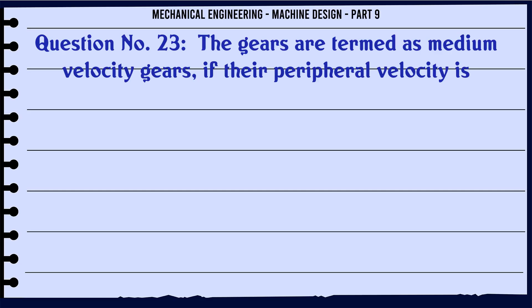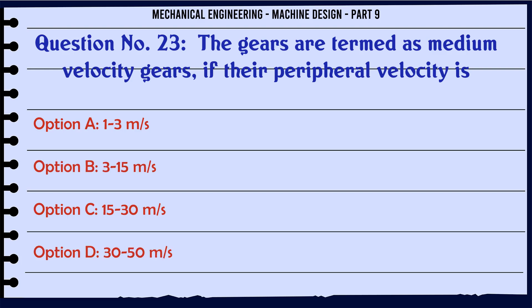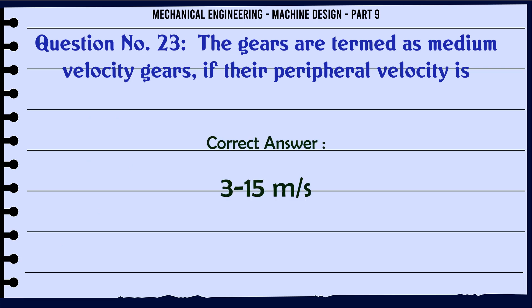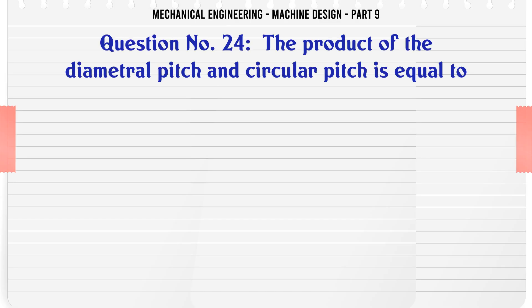The gears are termed as medium velocity gears if their peripheral velocity is: A. 1-3 m/s, B. 3-15 m/s, C. 15-30 m/s, D. 30-50 m/s. The correct answer is 3-15 m/s.